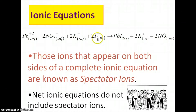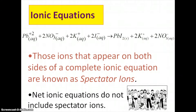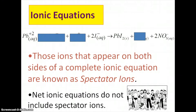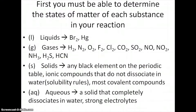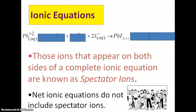Same thing for potassium iodide, and then the solids stayed together. Another ionic compound breaks apart, so we're going to show everything as it would appear in water, broken apart if it was ionic. Then you cross off all the spectator ions, and that gets you to the net ionic equation.